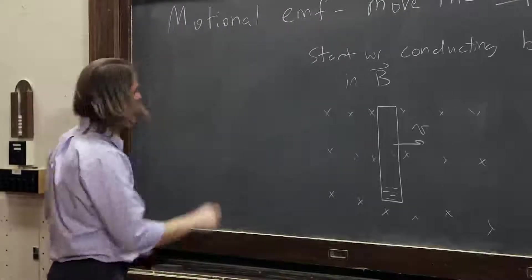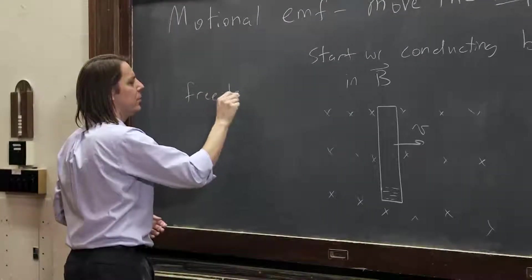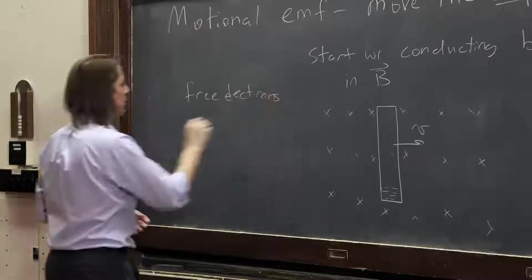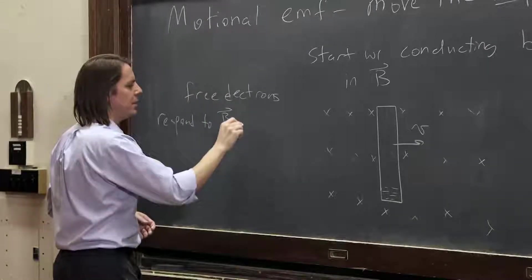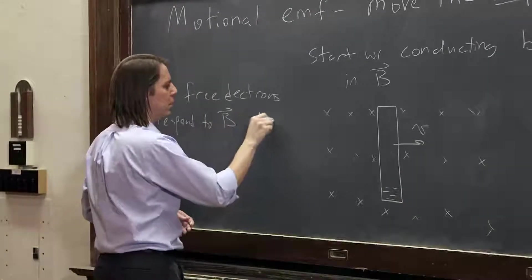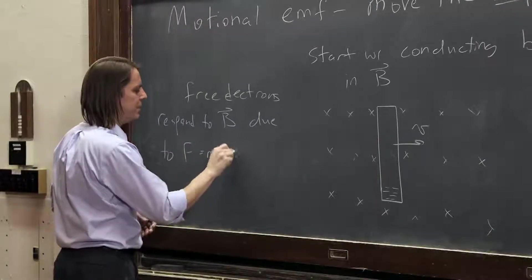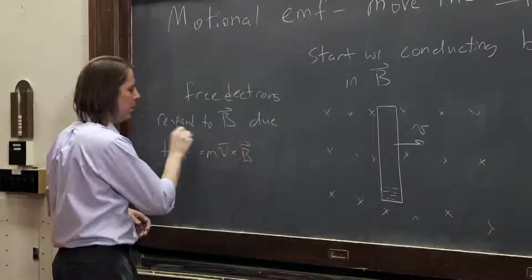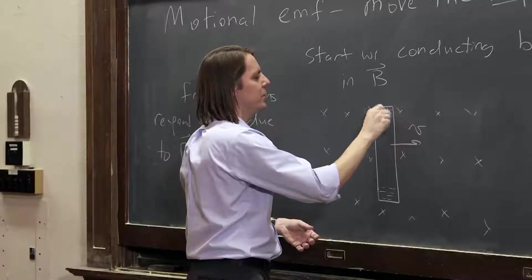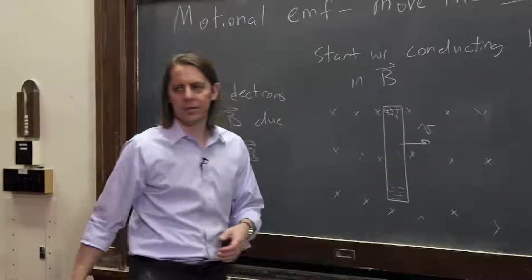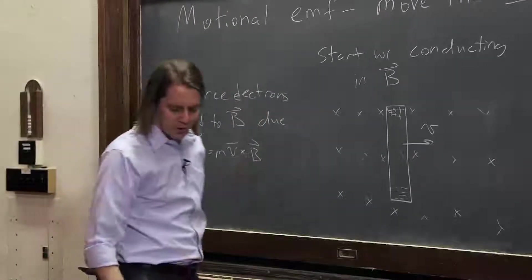So the free electrons respond to B due to F equals QV cross B. And they go to the bottom, which has to leave some of these positive nuclei slightly uncovered up here. So what we've done is we have sort of polarized this rod.